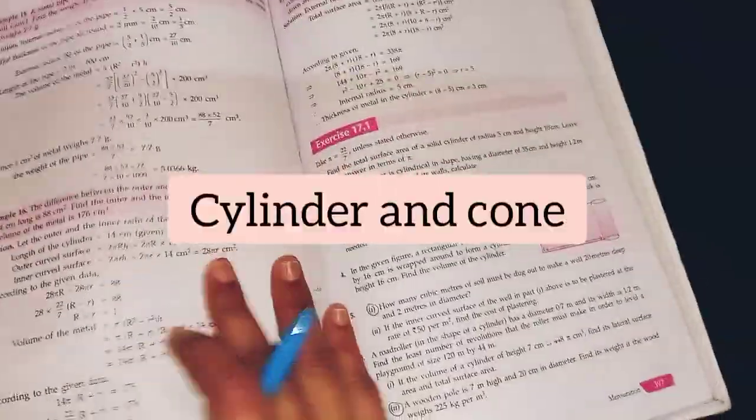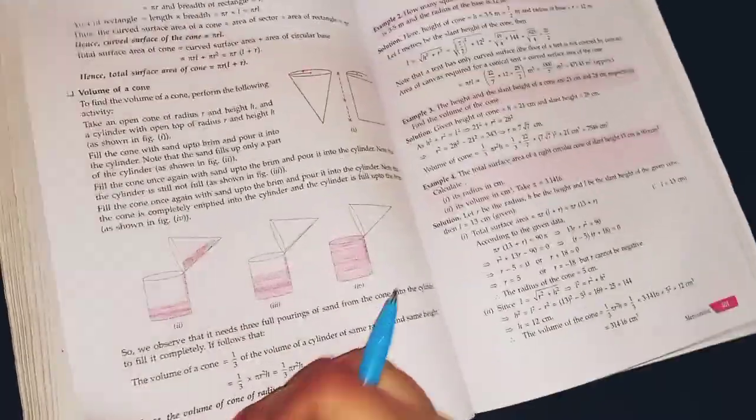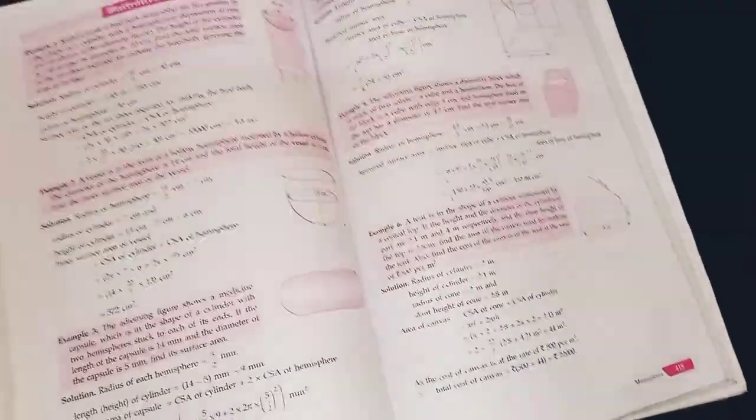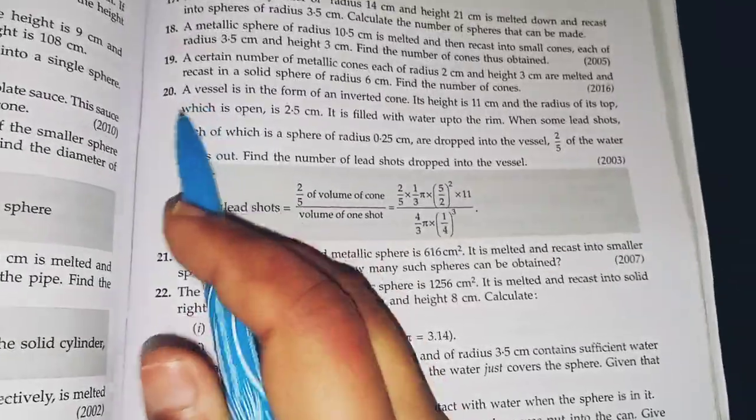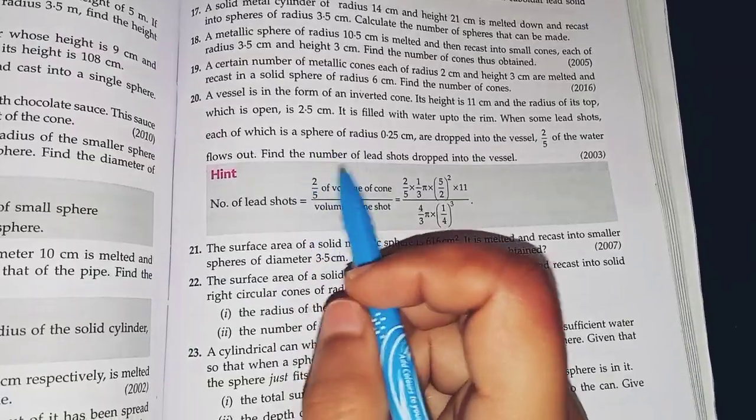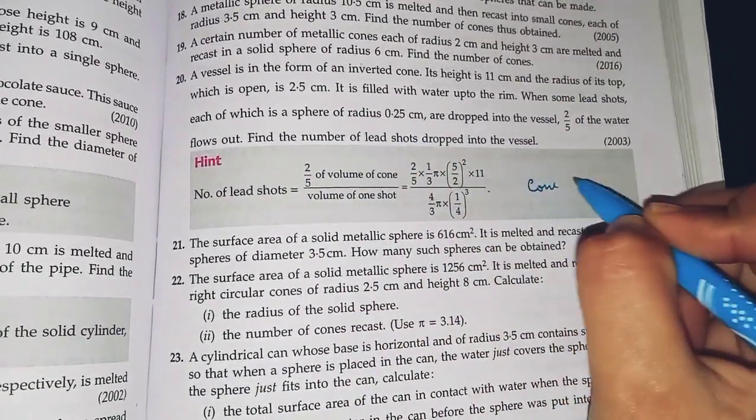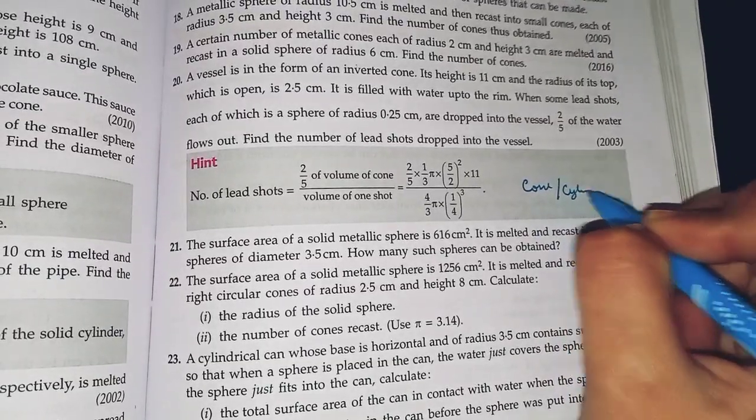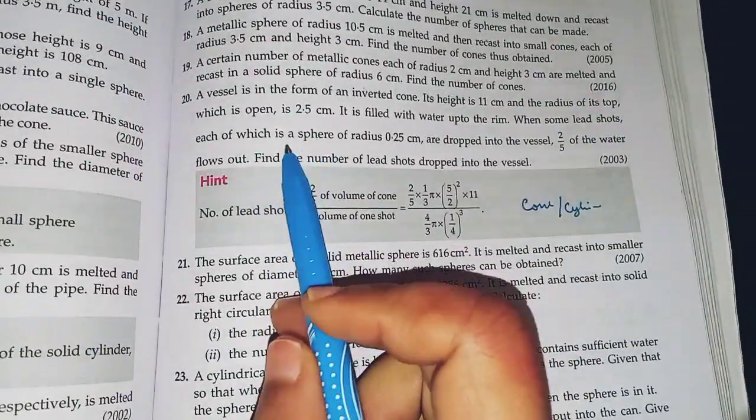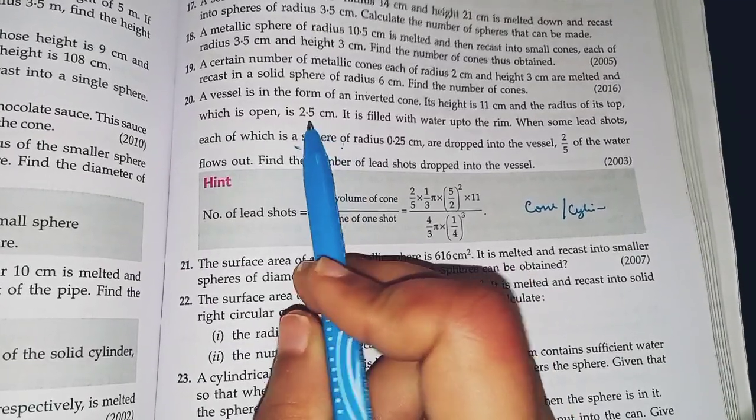Now, for mensuration, only cylinder and cone are in syllabus. I'll tell you a very important question. This question, question number 20. Here, they will ask you to find the number of lead. It may be cylinders or cones because they'll ask you a question on cylinder or cone. So, here it is written sphere but you don't have to do sphere questions. You can replace it with cone and then try it out.